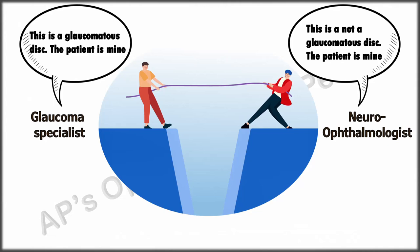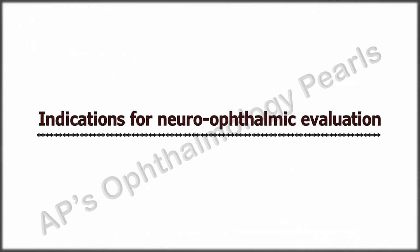How do we determine whether a patient has glaucoma or not? One has to be vigilant and look for red flags. A high IOP in the presence of disc changes is not usually problematic. It is when there is a suspicious disc in the presence of a normal IOP that one is often in a dilemma. The following are generally considered indications for further neuro-ophthalmic evaluation.